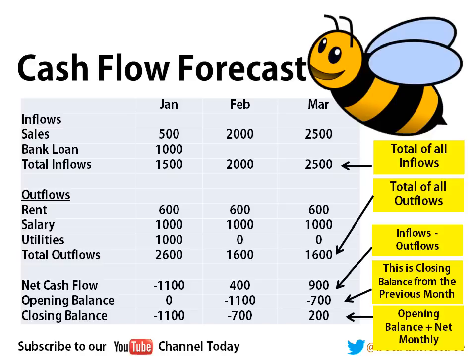Lastly, we have the closing balance — it's dead simple. That is your opening balance plus your net monthly cash flow. So what you started with in your bank account plus what you did in this month gives you your closing balance. In January it's minus 1,100, but in February we're positive 400, so minus 1,100 plus 400 means the closing balance is minus 700. Then in March, minus 700 plus positive 900 means our closing balance is positive 200 pounds — we are now out of debt.